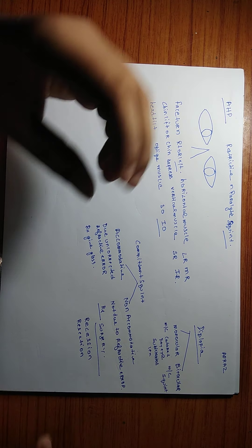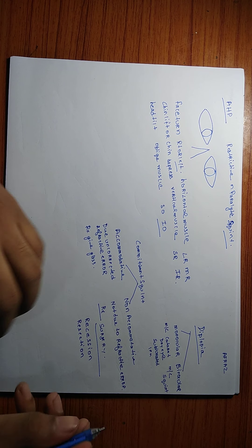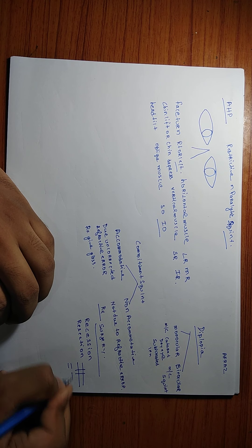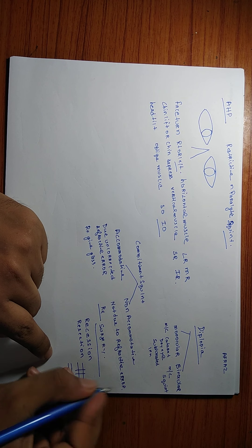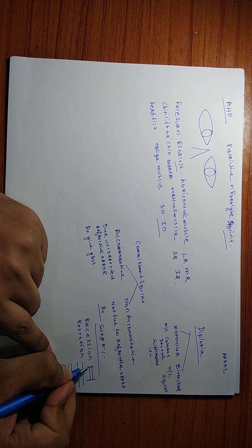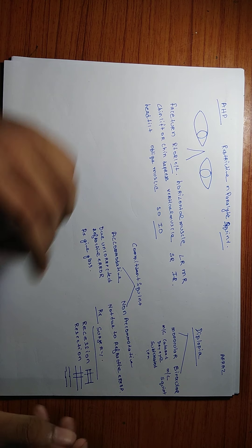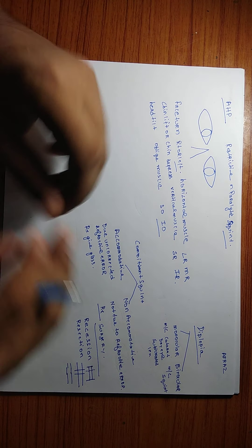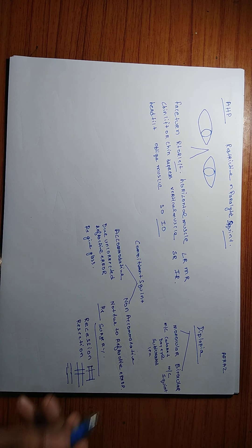Recession means to make the muscle weaker, and resection means to make the muscle stronger. If you give a cut on the muscle belly and rejoin it, the size reduces and the muscle becomes stronger — that is resection. If you cut at the insertion side and move it back, the muscle becomes weaker — that is recession. Surgery can either make the muscle weaker, make it stronger, or a combination of both.